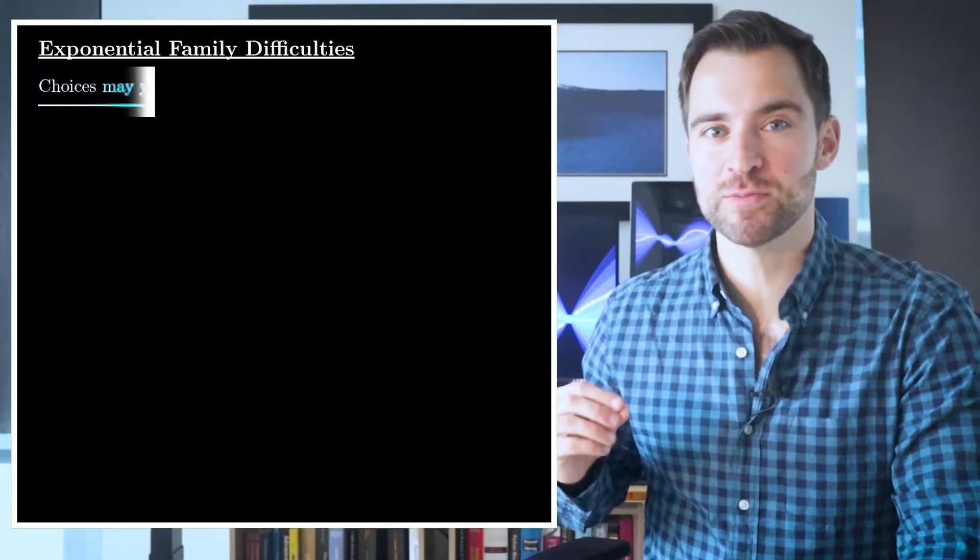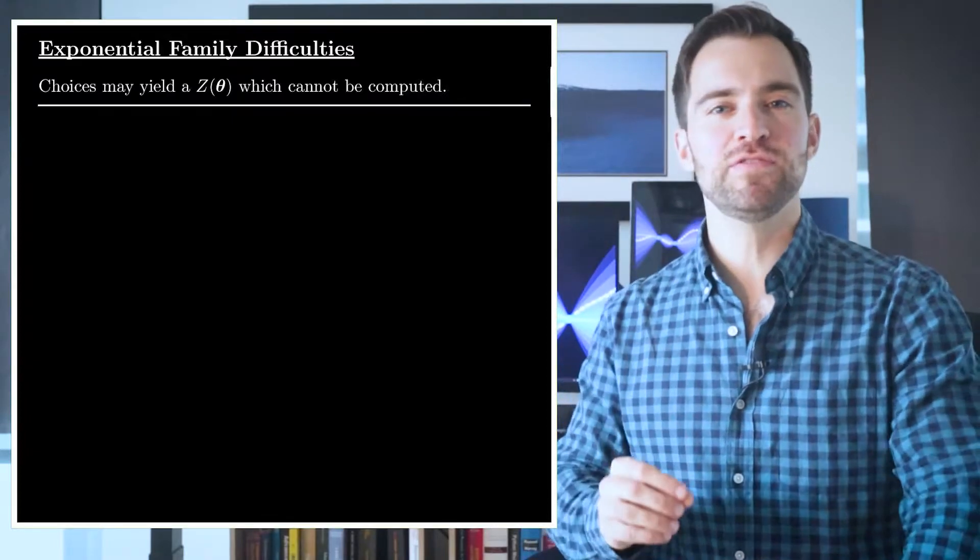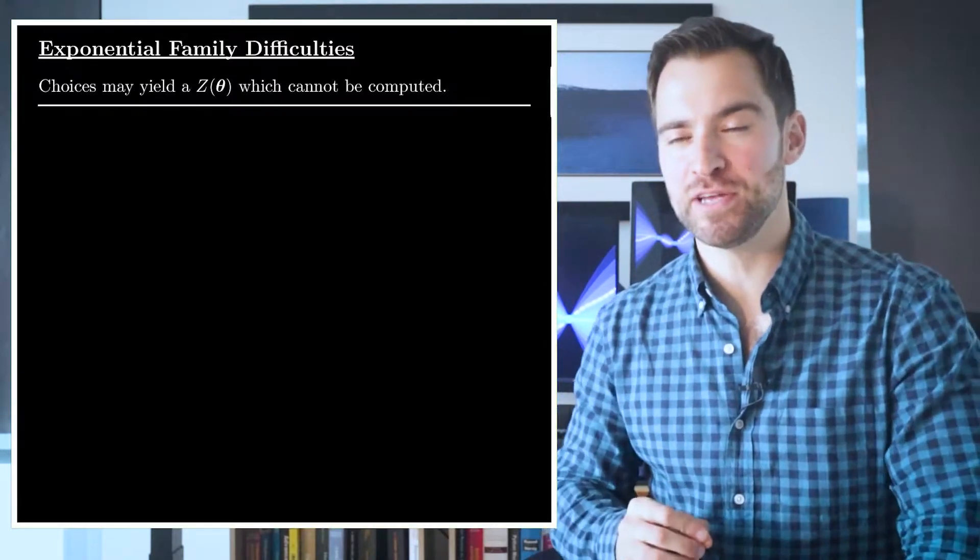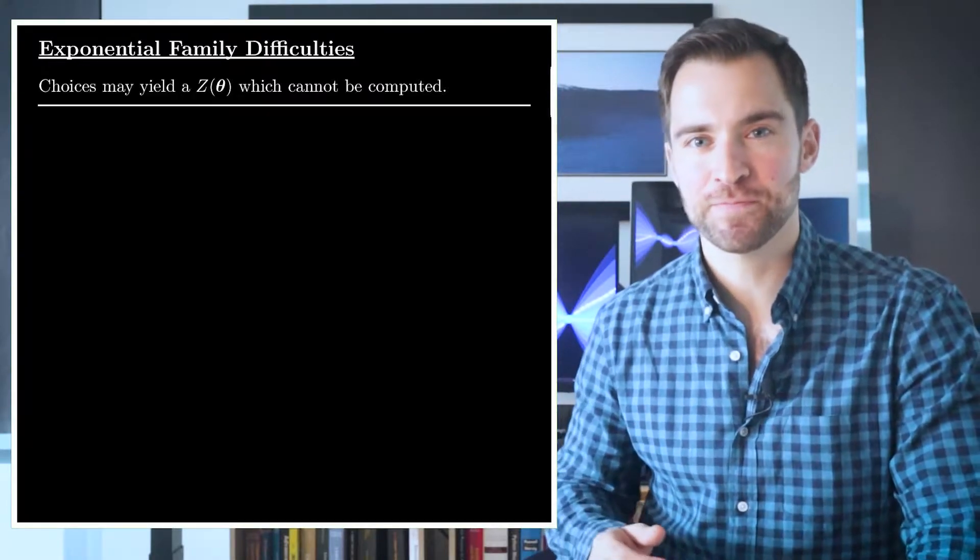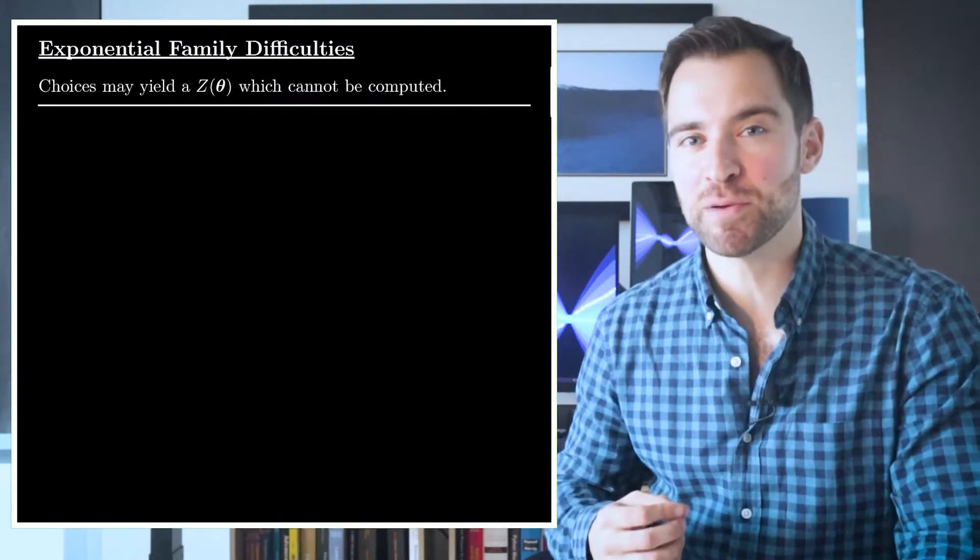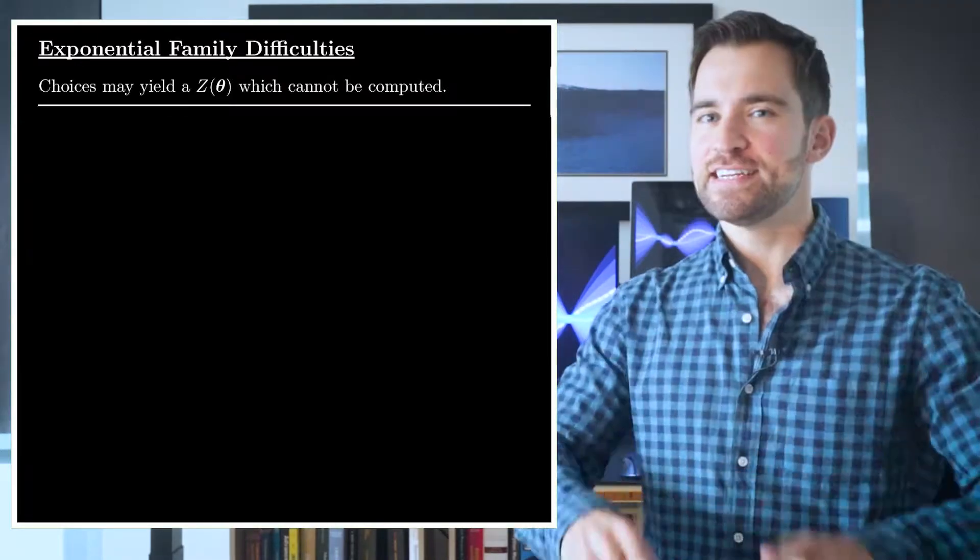Actually, this makes me think. Now's a good time to survey some of the difficulties you can run into if you're too wild with your choices. First, you could find yourself with an intractable normalizer. Like, in computer vision modeling, the normalizer might sum over all possible images, which is certainly impossible. In that case, you can't calculate a probability because you can't evaluate the normalizer.